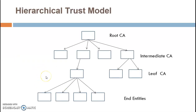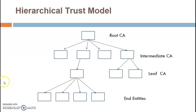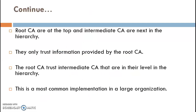The hierarchical trust model, as shown in the figure, is divided into a hierarchy: Root CA, then Intermediate CA, Leaf CA, and finally End Entities. The Intermediate CAs only trust information provided by the Root CA, and the Root CA trusts the Intermediate CAs that are next in the hierarchy. This is the most common trust model implementation and is used in large organizations.